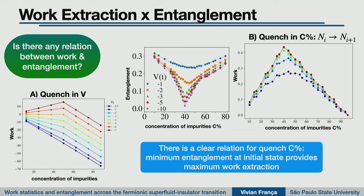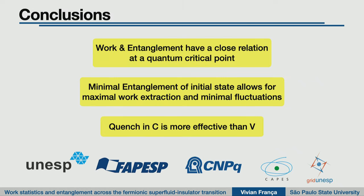At the critical point, we find great work extraction for this system. The general conclusion for this last part is that — at least for this type of quenching in concentration — there is a direct connection between work extraction and entanglement at the critical point. You could imagine something like a quantum critical battery in the sense that you can easily get energy from there. The minimal entanglement of the initial state allows for maximum work extraction, and quenching in concentration C is more effective than quenching in V.